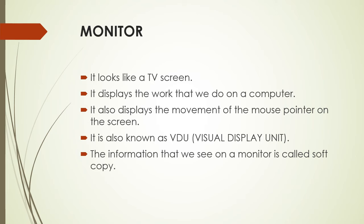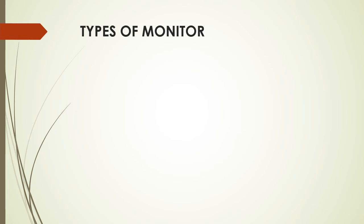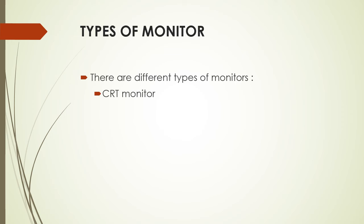Now you understand the basic difference between soft copy and hard copy. Then we will see the types of monitor. In the market there are different types of monitors available: the first one is CRT monitor, which was used in earlier days, then LCD monitor, and then LED monitor.